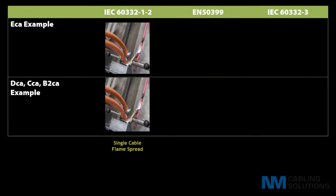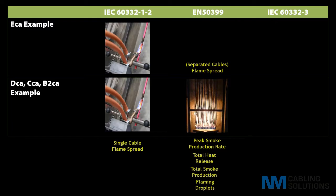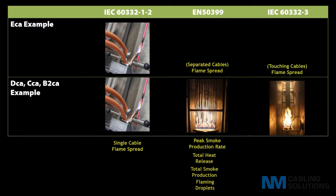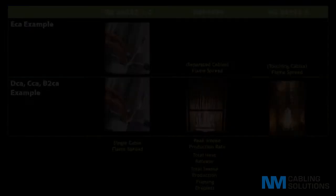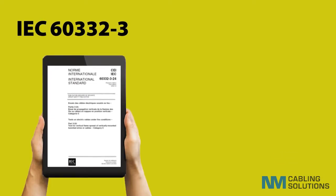We will endeavor to explain the key important differences between the CPR and the non-discriminatory testing carried out using the IEC 60332-3 series. IEC 60332-3 uses a test method that calls for all the cables placed on the ladder rack to be touching, therefore not allowing any gaps to allow the flame to circulate the complete cable.